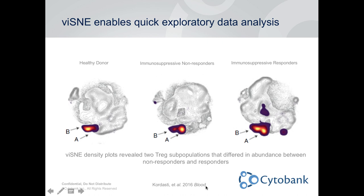The example for today is from a 2016 Blood paper by Kordasti and colleagues. This figure shows how viSNE was used as a quick exploratory data analysis tool to look for differences in three different cohorts: healthy donors, aplastic anemia patients not responding to immunosuppressive therapy, and those responding to immunosuppressive therapy. They ended up identifying two different Treg subpopulations whose abundance was predictive of whether patients responded or not.